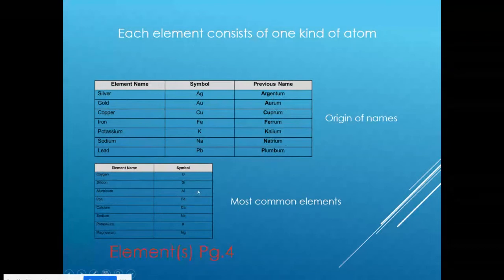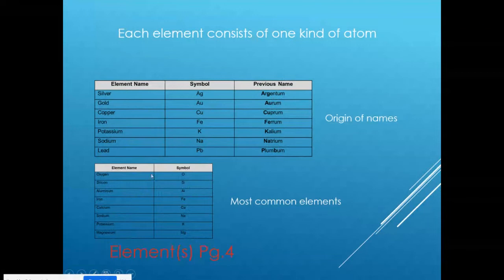Polyatomic elements are elements that exist as molecules of more than one atom. They are represented by a molecular formula with a subscript indicating the number of atoms. Hydrogen gas is H2, oxygen gas is O2, ozone is O3, nitrogen is N2, chlorine is Cl2, and sulfur is S8. This tells us the number of atoms required to make the elemental polyatomic molecule for that particular substance.